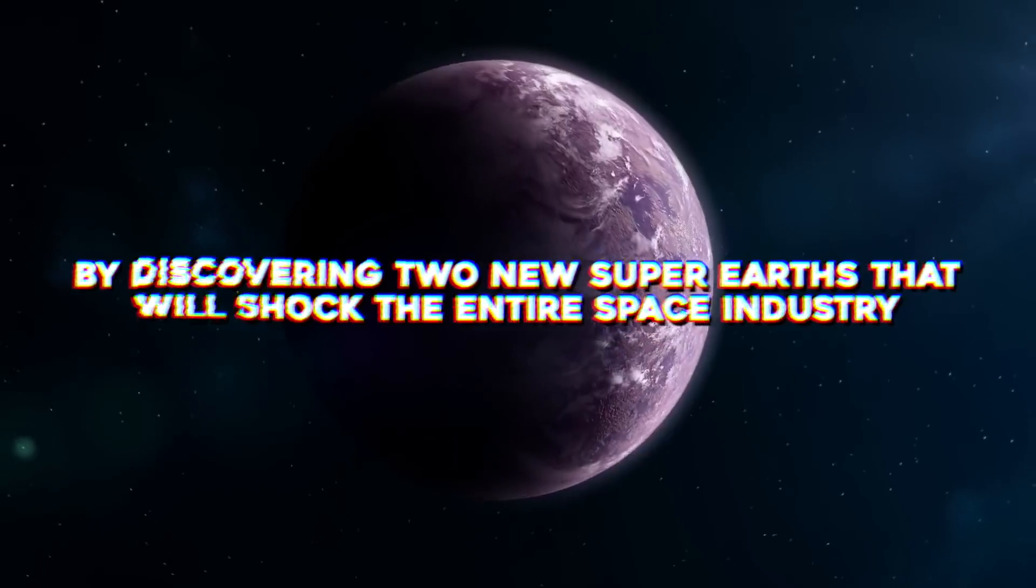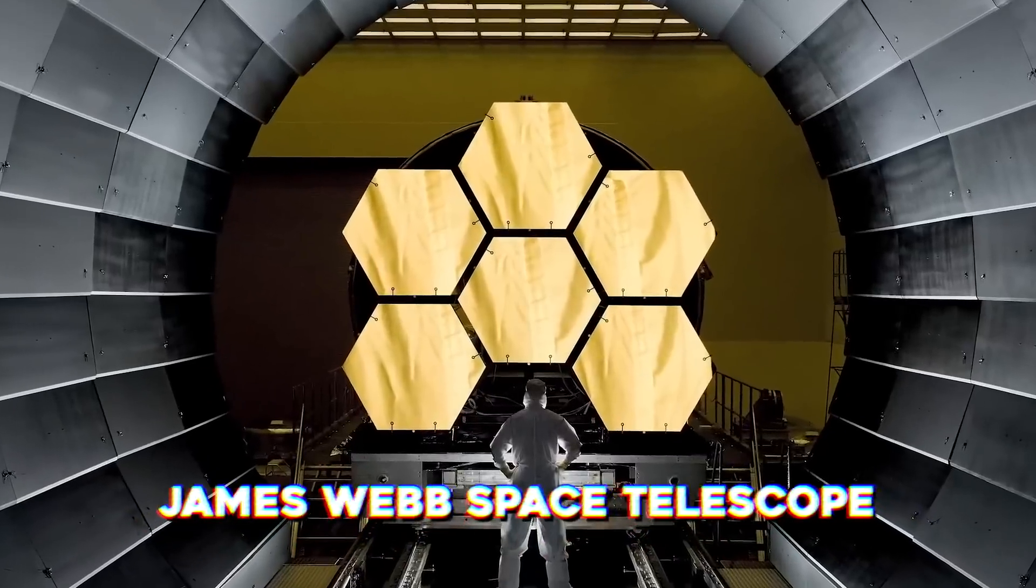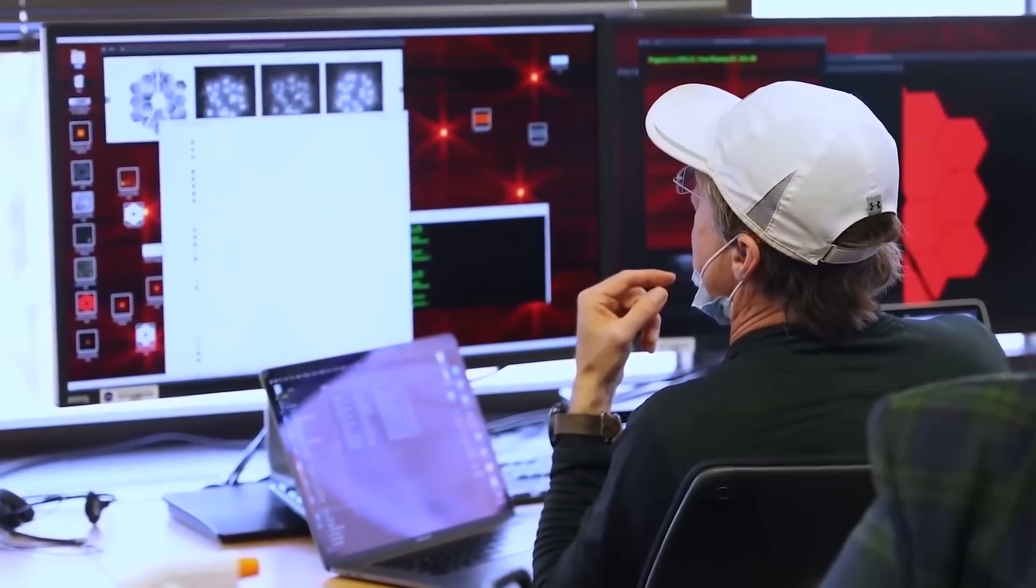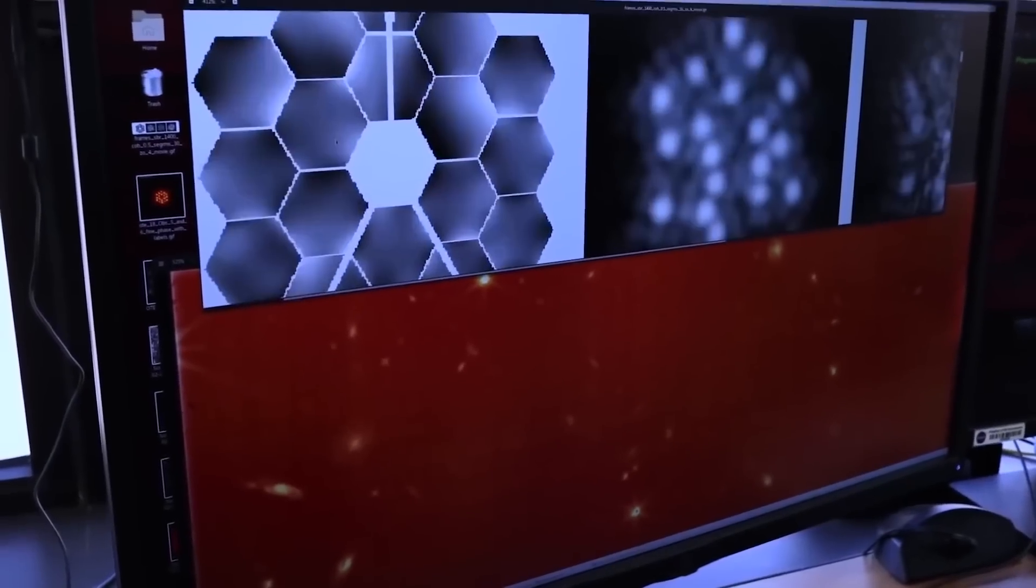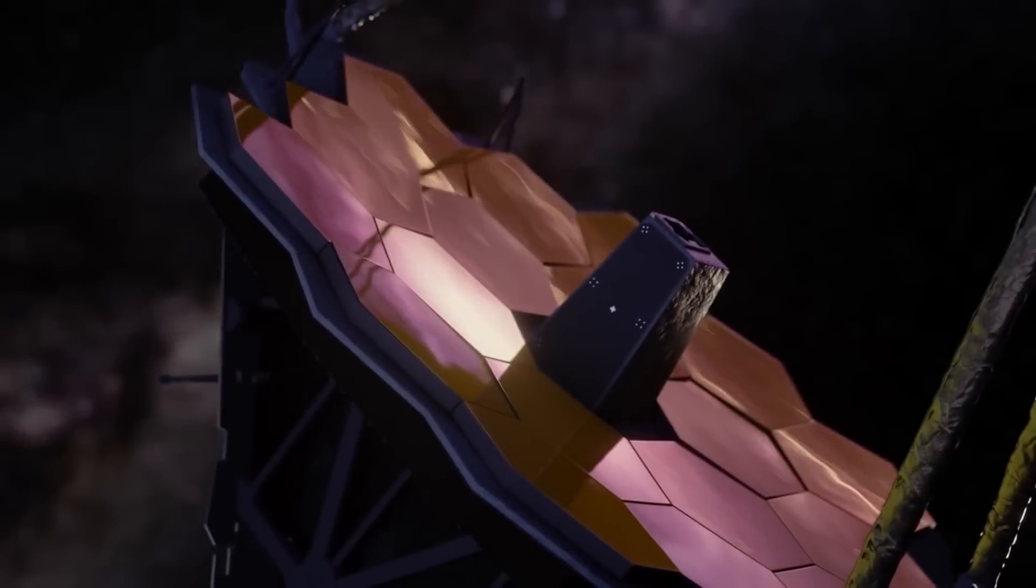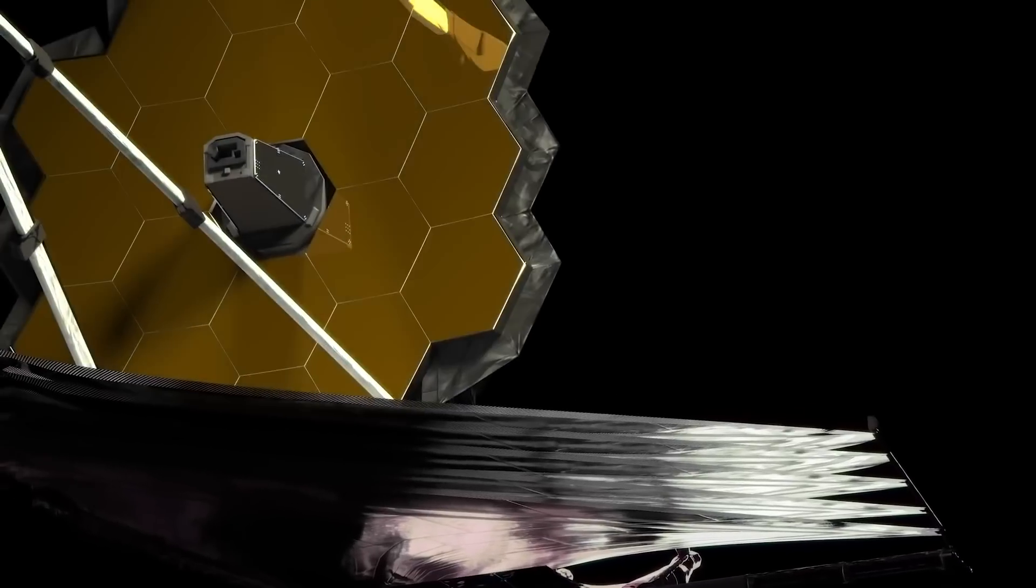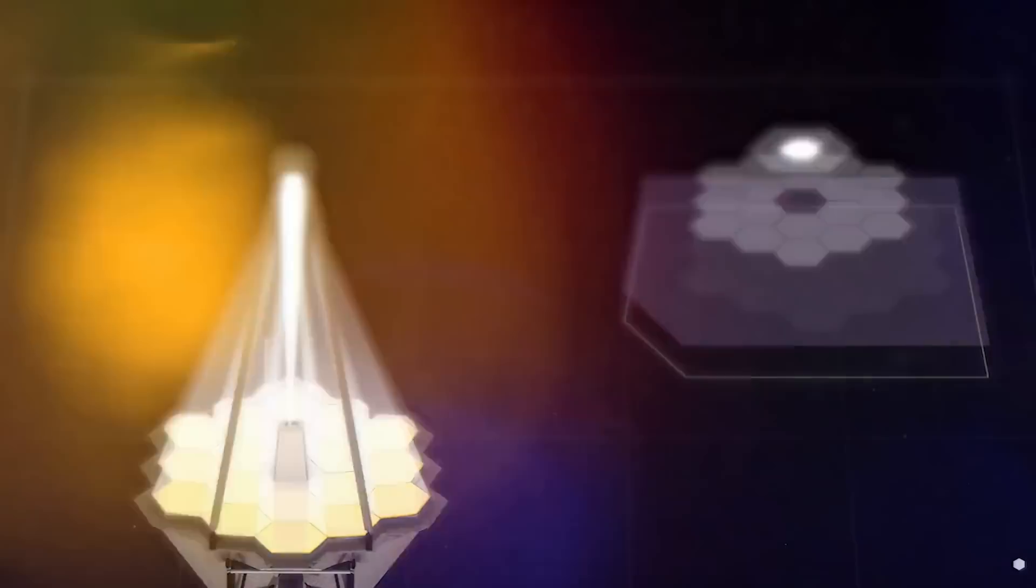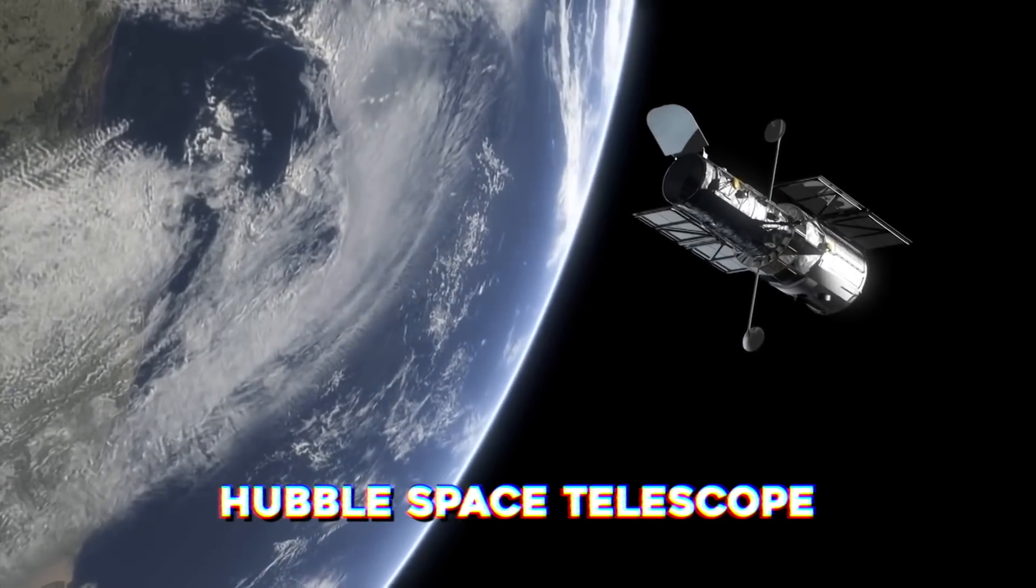The James Webb Space Telescope, or JWST, has been in space for about six months, which is just a fraction of the time NASA spent designing and building it. All that effort is about to pay off, though. NASA designed the JWST as a follow-up to the hugely successful Hubble Space Telescope.